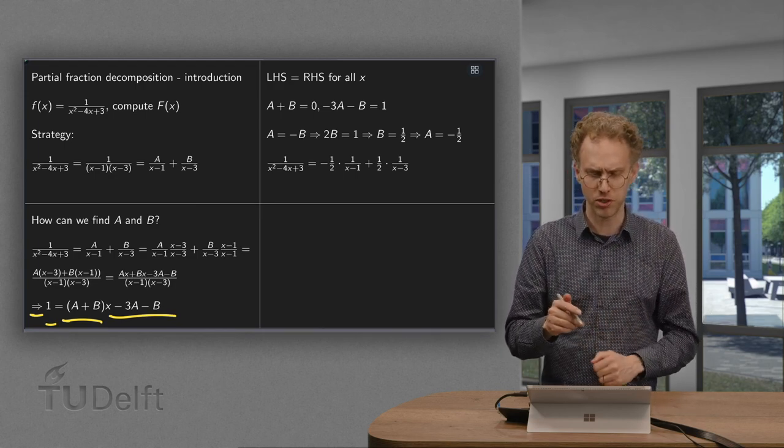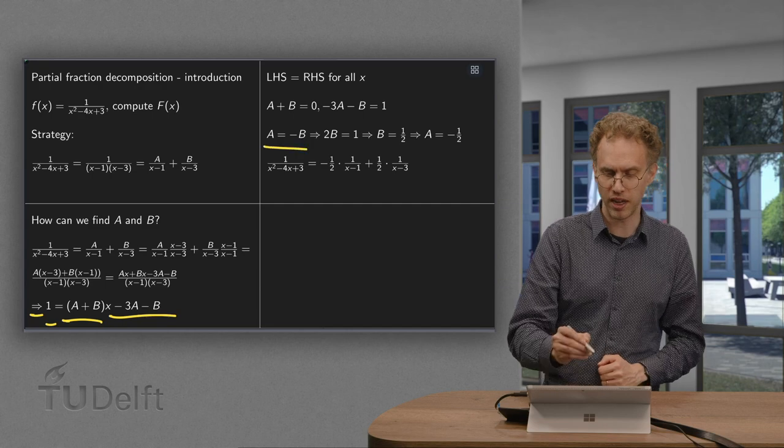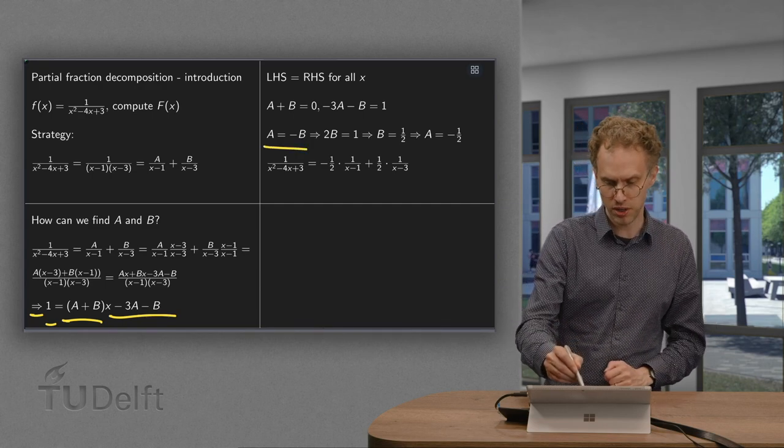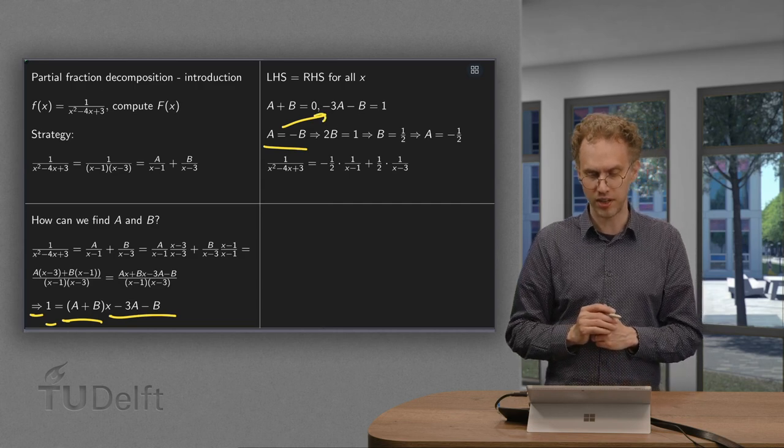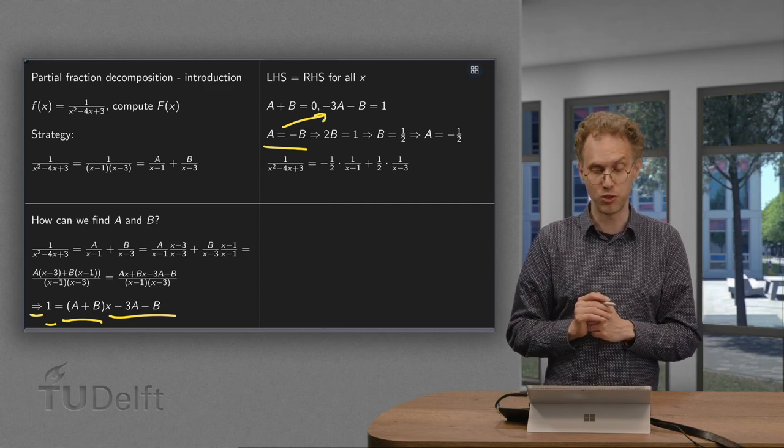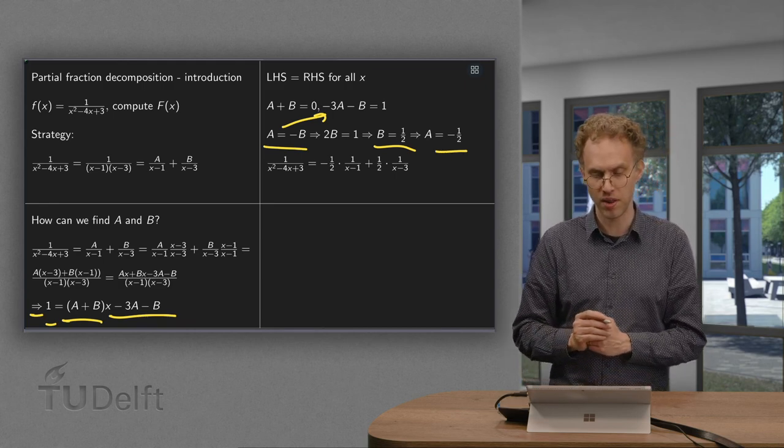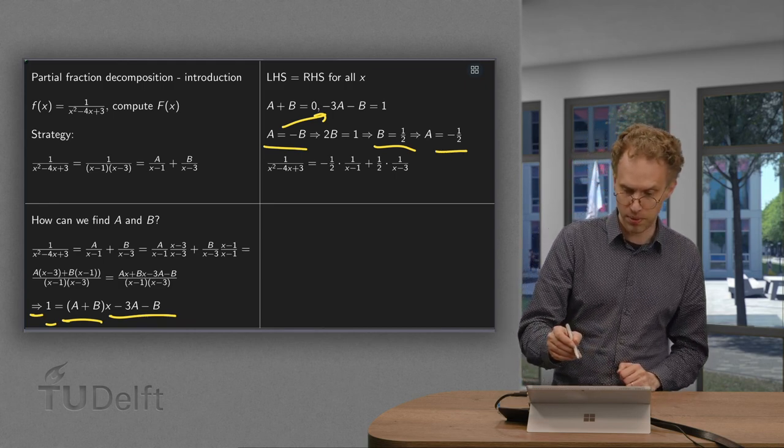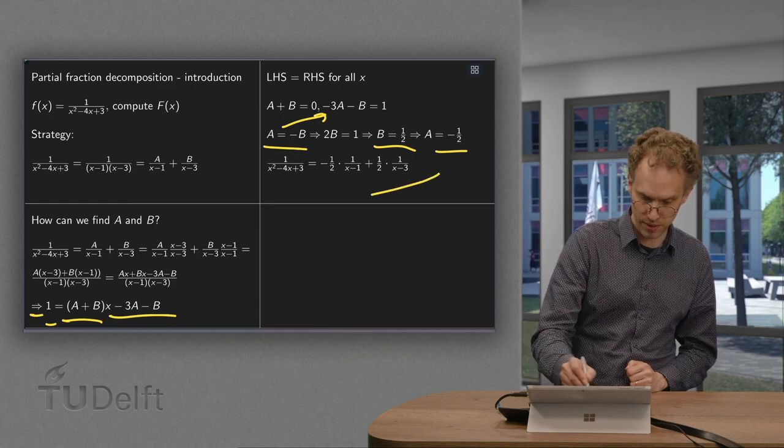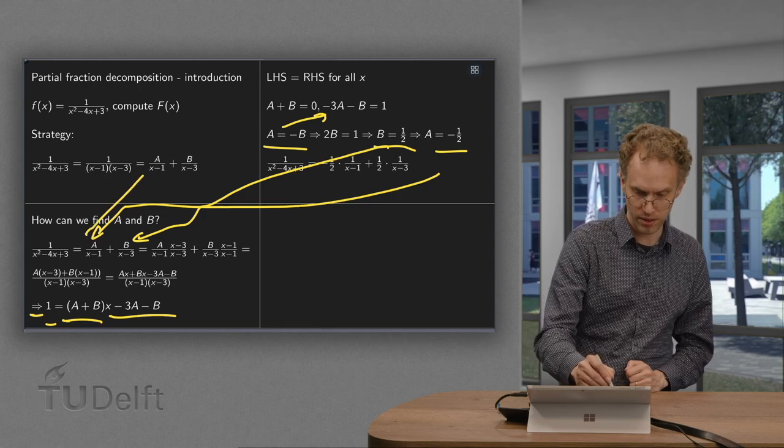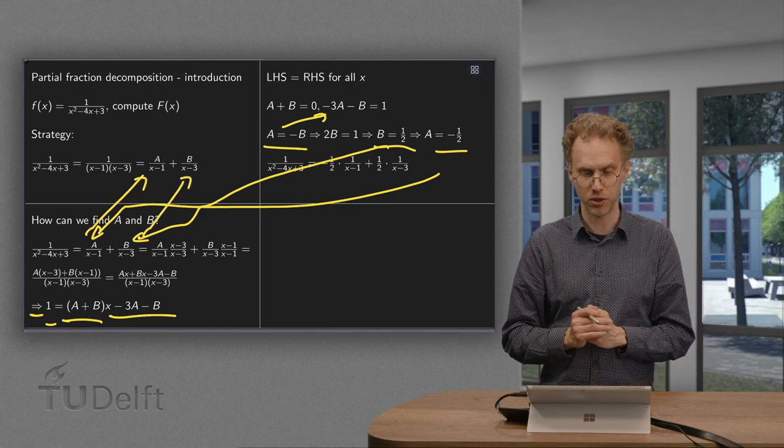You can use linear algebra or substitution. The easiest would be to put A equals minus B, then substitute. So you get 3B minus B equals 2B equals 1, so B equals 1/2. And A equals minus B equals minus 1/2. Then plug them in.